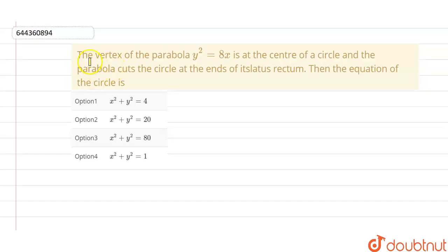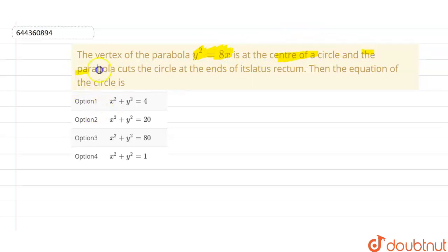The given question here is: the vertex of the parabola y² = ax is at the center of a circle, and the parabola cuts the circle at the ends of its latus rectum. Then the equation of the circle is — I have to find it from the given options.